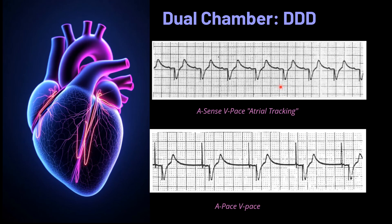In the third ECG, the P wave is from the intrinsic heart — it is sensed (A sense) — and the ventricle is paced (V pace), so the QRS complex is followed by a pacing spike. This is called atrial tracking in dual chamber mode. In the fourth ECG, the atrium is paced (no intrinsic atrial activity) and the ventricle is also paced, with no intrinsic activity in either chamber.